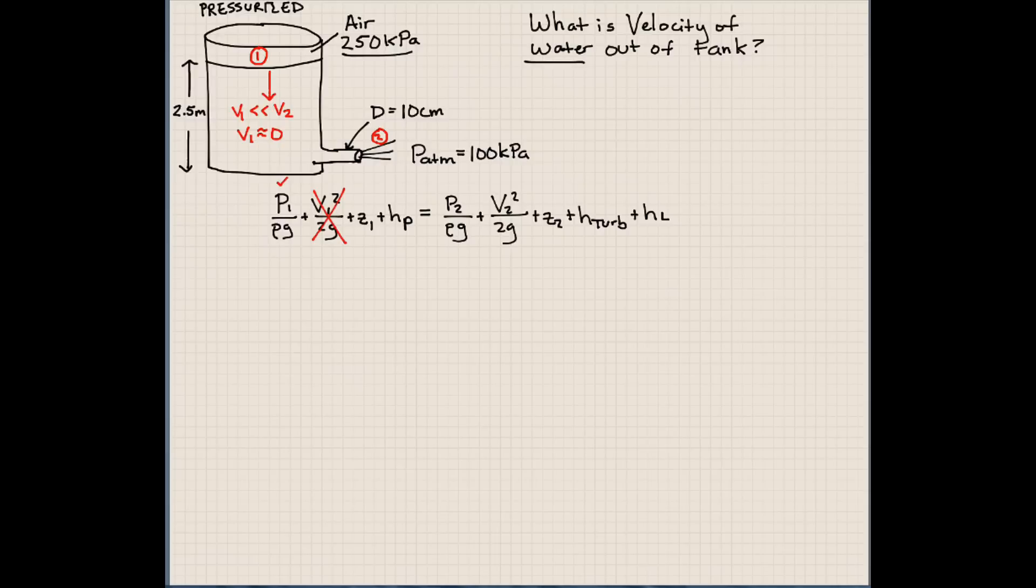So Z1, we do have some potential energy associated with this water. We do not have a pump in our line between points 1 and 2. Pressure at point 2 is atmospheric. We'll keep that. Velocity at point 2, we do have. We do not have an elevation at point 2. We're going to say this is our 0 point. We do not have a turbine between points 1 and 2. And again, we're going to assume no loss.